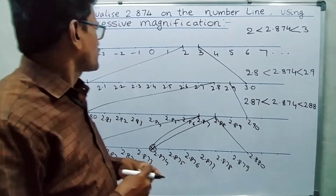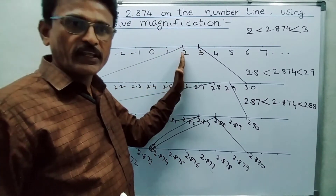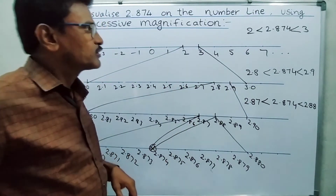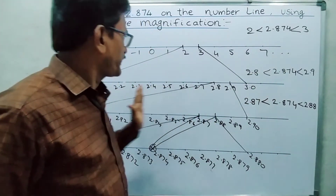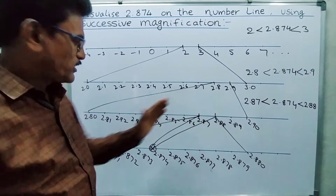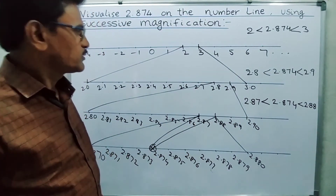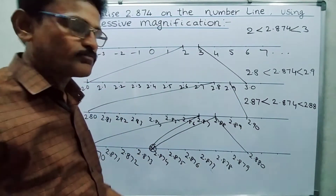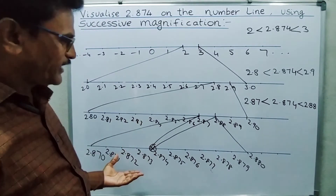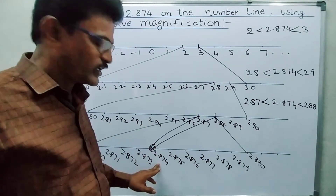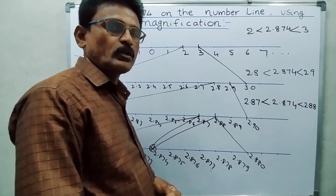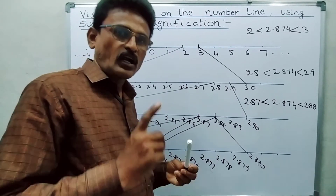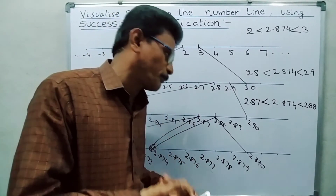So first search 2 and 3 on the number line, divide that into 10 parts and search 2.8 and 2.9. Once again divide into 10 parts and search 2.87 and 2.88 on the number line, and finally divide into 10 parts to get 2.874. Now we will see the next example: non-terminating repeating decimal.